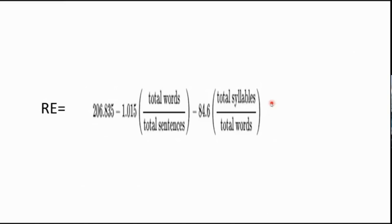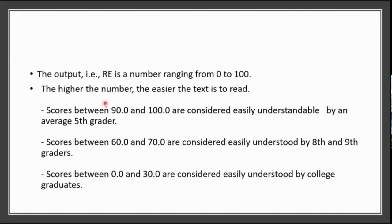In this score formula you get a score from 0 to 100. The higher the number, the easier the text is to read. The score will be higher towards 100 when the number of syllables is less and the number of words per sentence is less — that means short sentences with fewer syllables. If you maintain these two things, your script is easy to read, and easy to read means not only reading but easy to understand.